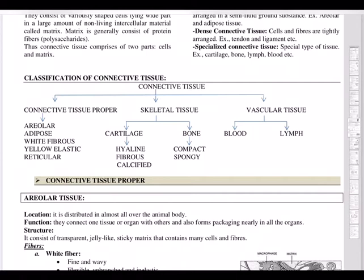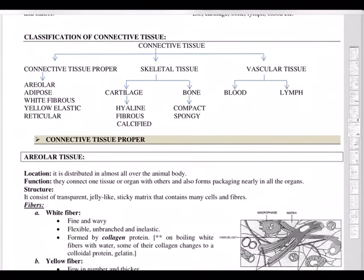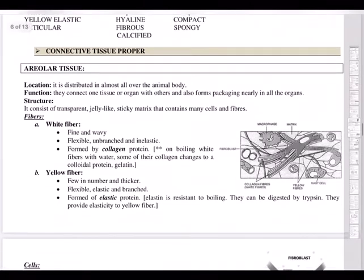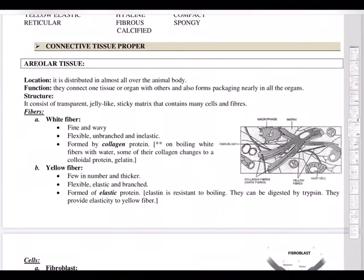Starting with connective tissue proper: areolar tissue is distributed almost all over the animal body. Its function is to connect one tissue or organ with others, and it also forms packaging material in all organisms. Looking at the diagram, there is a matrix, a macrophage, collagen fibers, yellow fibers, and mast cells.